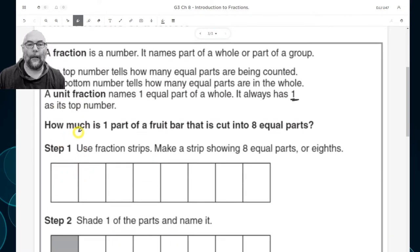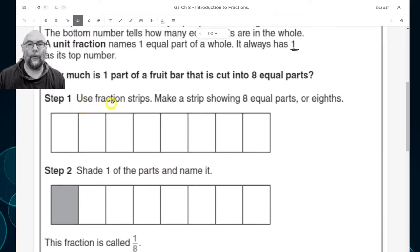How much is one part of a fruit bar that is cut into eight equal parts? Step one, use fraction strips. Make a strip showing eight equal parts, or eights. Okay. So here we have one, two, three, four, five, six, seven, eight.